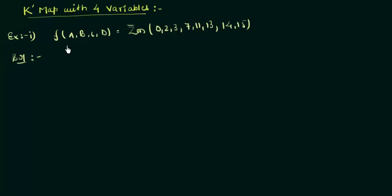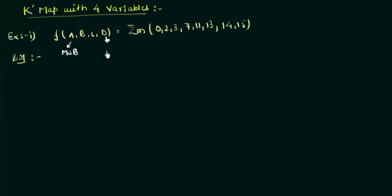As you can see, there are four variables involved: A, B, C, D. So it's very obvious that we have 16 possible combinations, and each combination is represented by one cell in your KMAP. So for 16 combinations there are 16 cells. A is your MSB and D is your LSB.